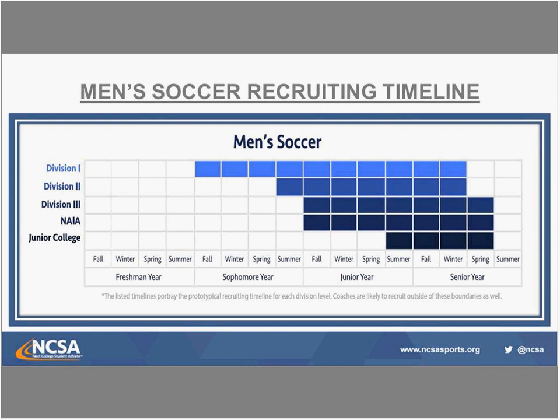Division II on the men's side starts putting together their list of players mostly during camps in the summer going into junior year. Once the contact period begins, they evaluate throughout junior year. Verbal commitments come in the summer and fall of junior year through early senior year, finalizing in the winter. Division III and NAIA timelines are almost exactly the same, stretching into spring of senior year — so there are still 2018 programs looking for 2018 players out of NAIA, Division III, and the junior college route.